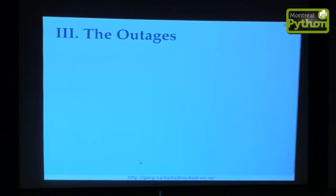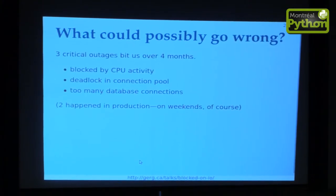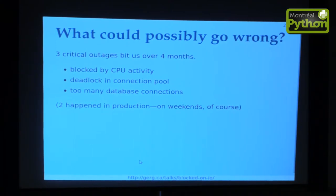So what could possibly go wrong? Over the course of four months, we had three critical outages. Two of them hit in production. And of course, both of them came on weekends, naturally. Number one: our event loop was blocked — not by I/O, not by a rogue database query or an NFS file — it was blocked by CPU activity, that thing they don't tell you about in the documentation. Number two: we had a deadlock in the connection pool in Momoko. Number three: it blew up because we tried to open more database connections than Postgres was configured for.